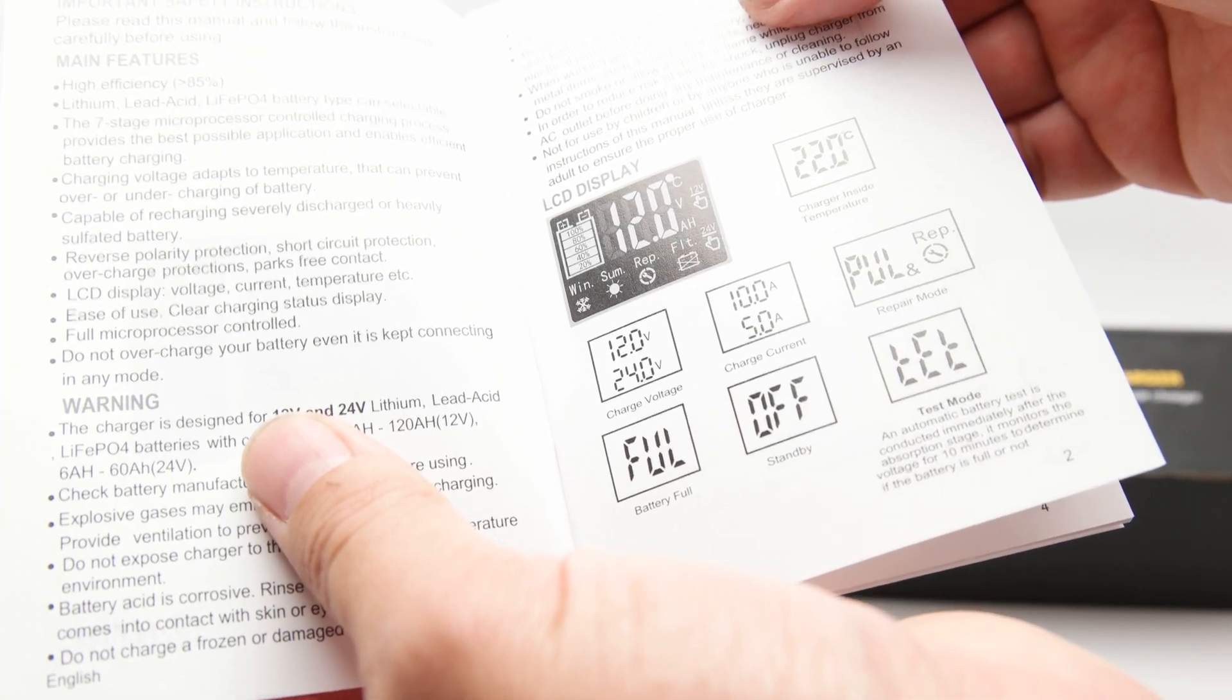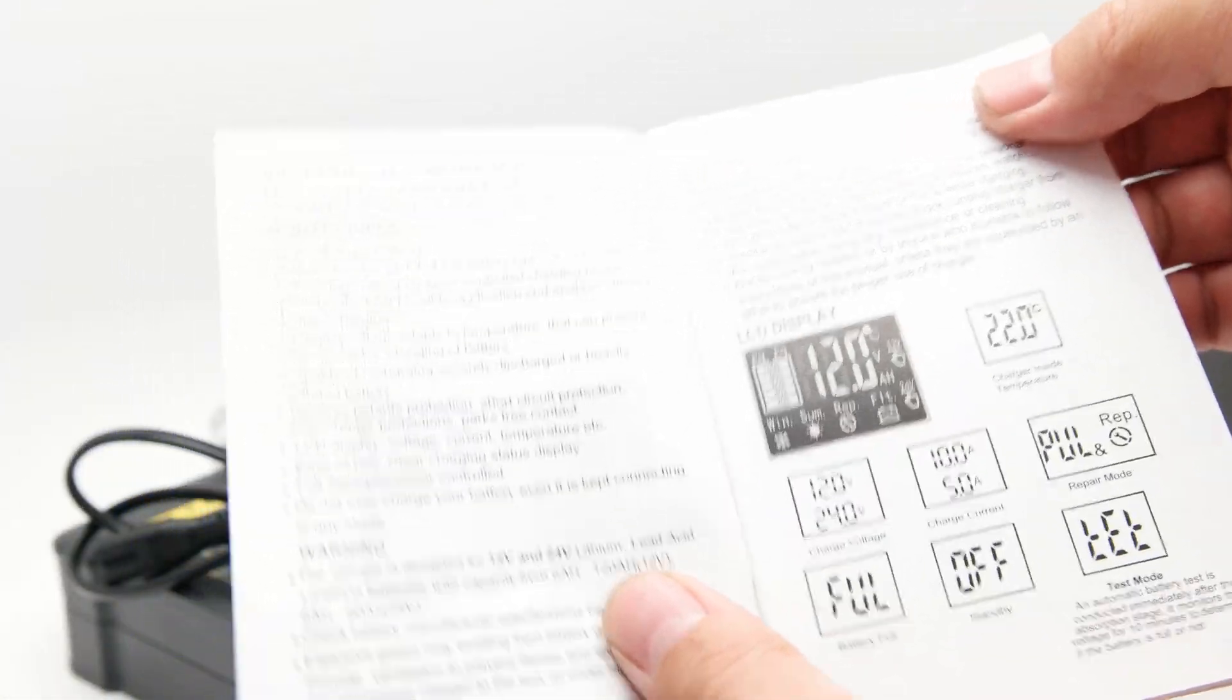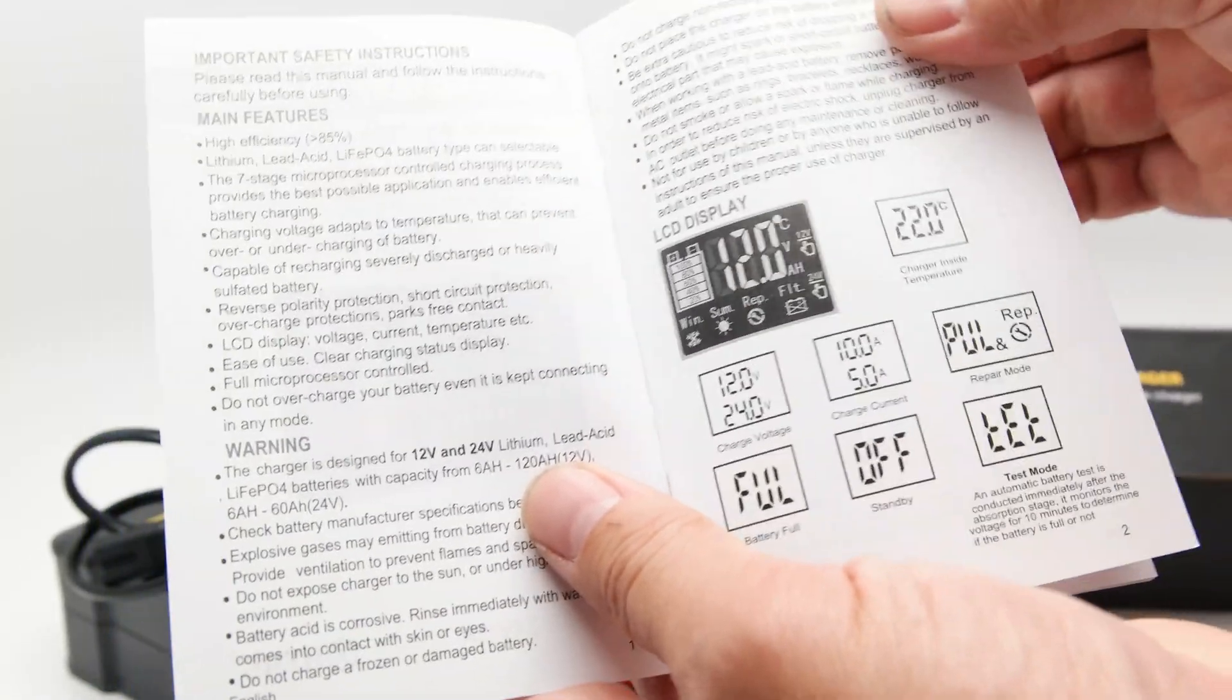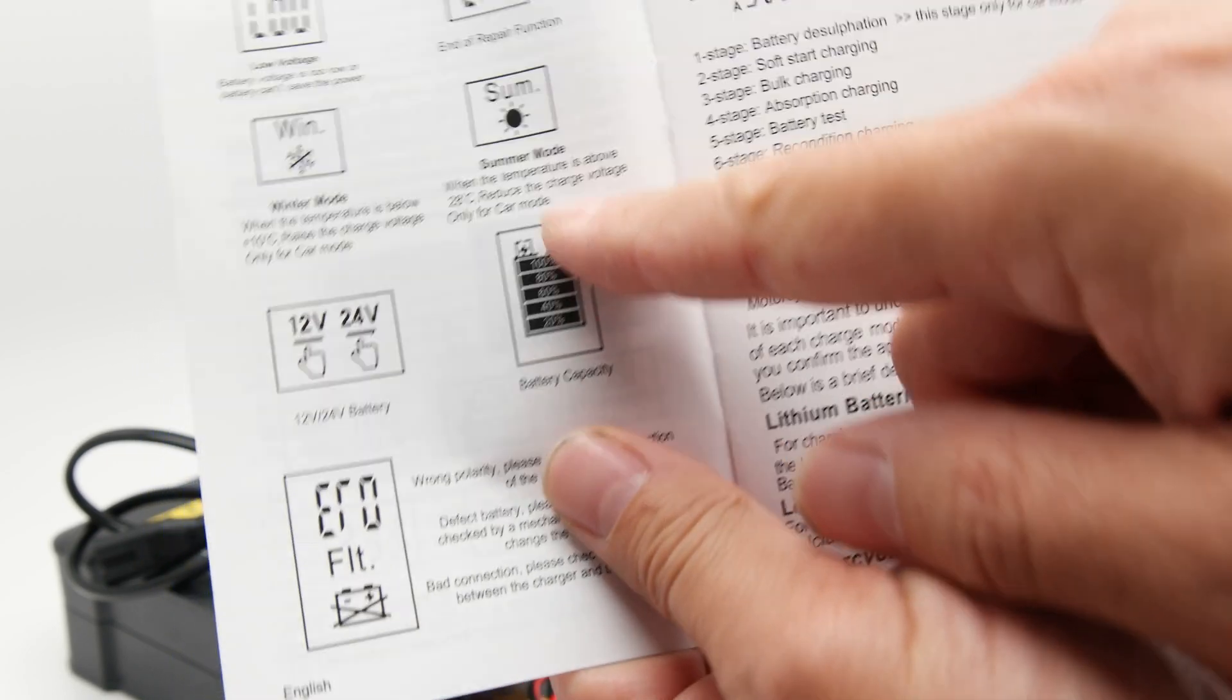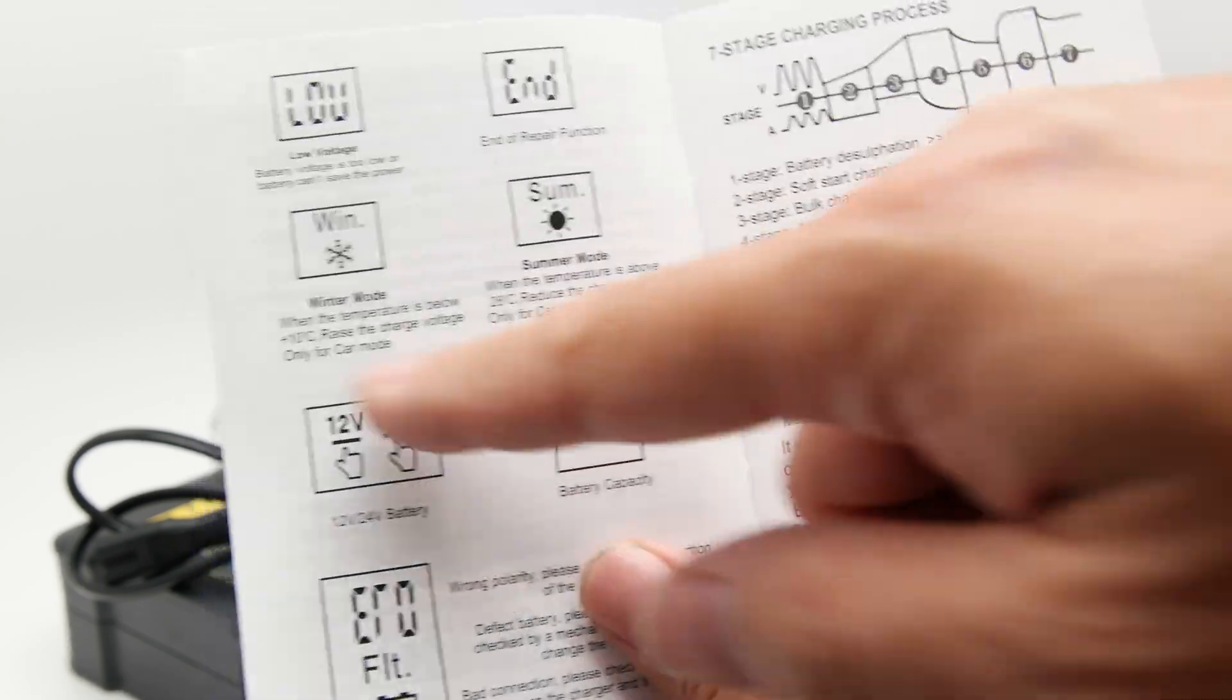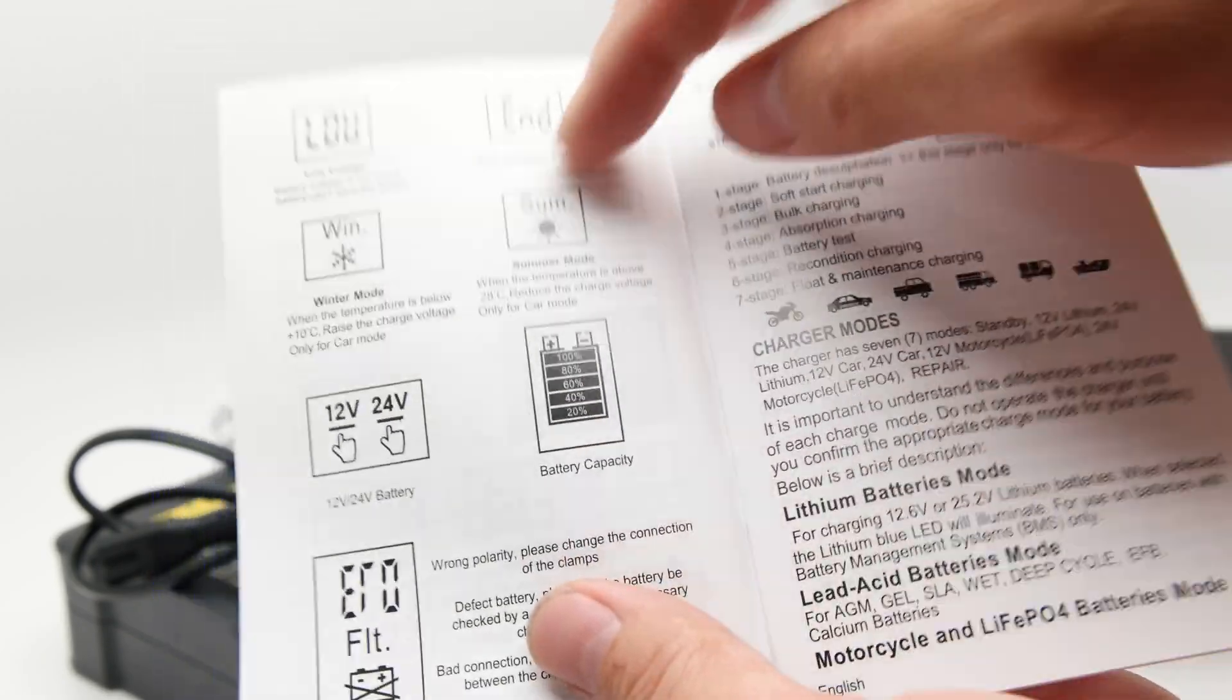Now, one other thing that I'm worried about with something like this is whether or not this can withstand leaving outside. So I don't see anything on here. And in case you're wondering, this is a seven stage charger, according to this little sheet here. Summer mode, when the temperature is above 28 C reduce the charge voltage only for car mode. Okay, so basically what different car modes went to use winter mode, summer use summer mode, and low voltage is too low battery can't be saved.